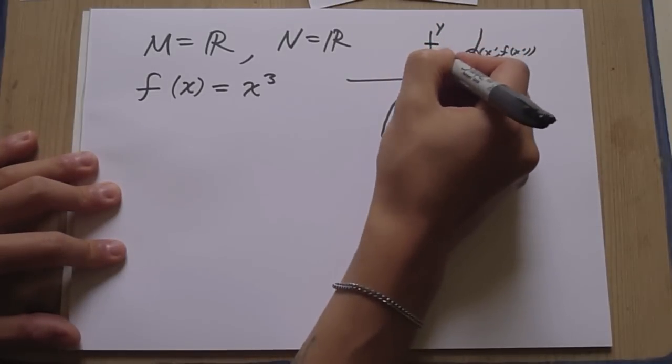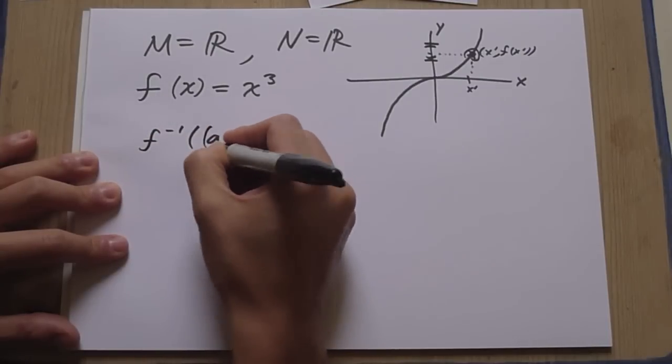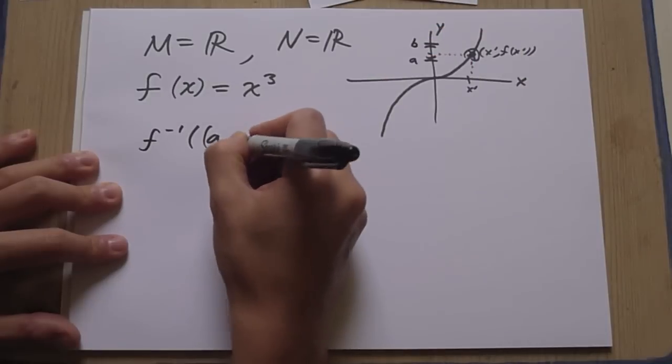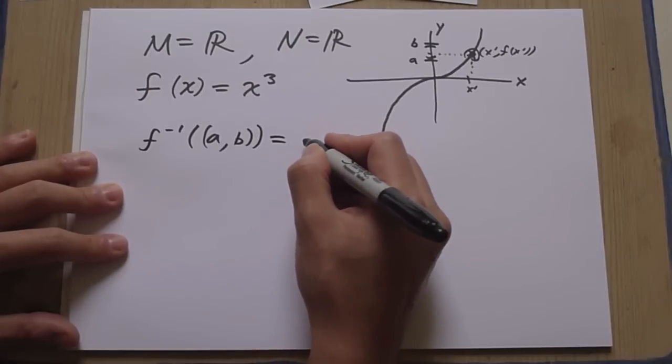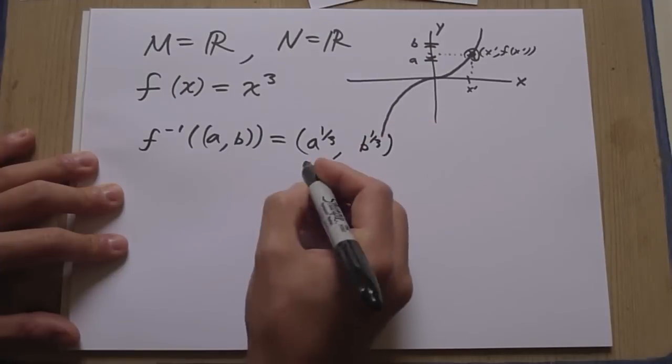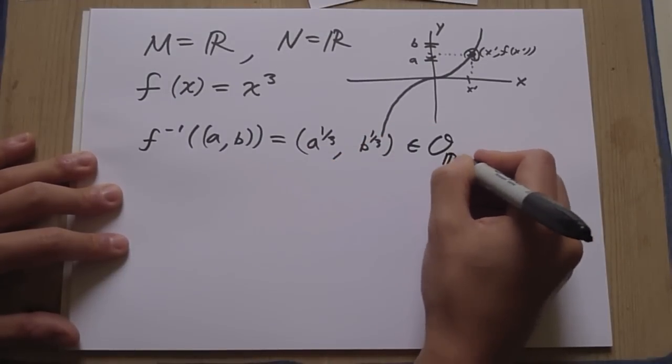Let's just check it is. So take an open interval here. So F inverse of the open interval from A to B. What you'll get is another open interval. You'll get the open interval from the cube root of A all the way to the cube root of B.